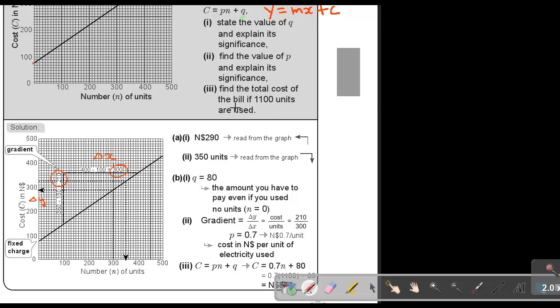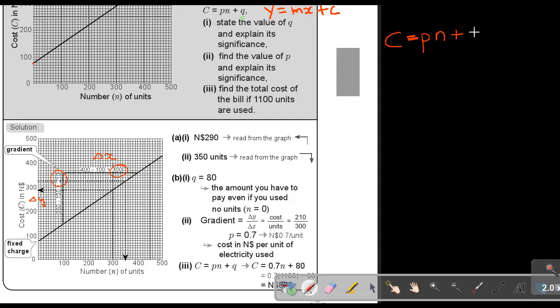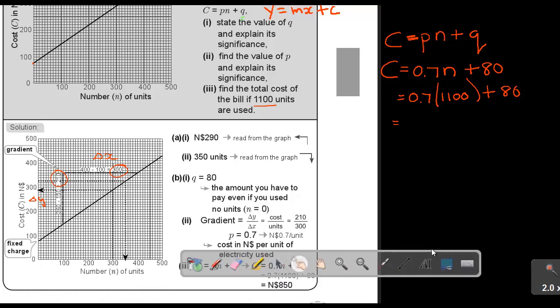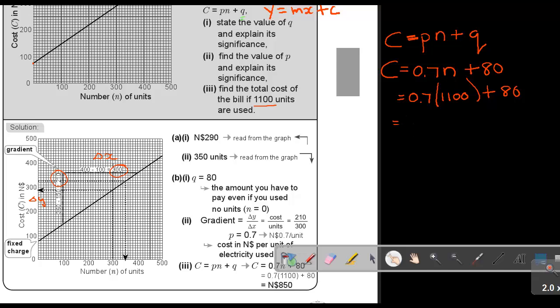And then the last one, find the total cost of the bill if these units are used. Now I can use the formula. So basically, I'm just going to substitute. Now, can you remember, it was C equals PN plus Q. So basically, I'm going to say C equals 0.7N plus Q. I'm substituting that two values in. There is my straight line equation now. And now, I'm just going to fill it in. So 0.7, and now how many units are used, it's quite a lot. And plus that basic fee. And if I'm going to work it out, if we substitute, we are going to come to an answer of 850. That will be your total bill.